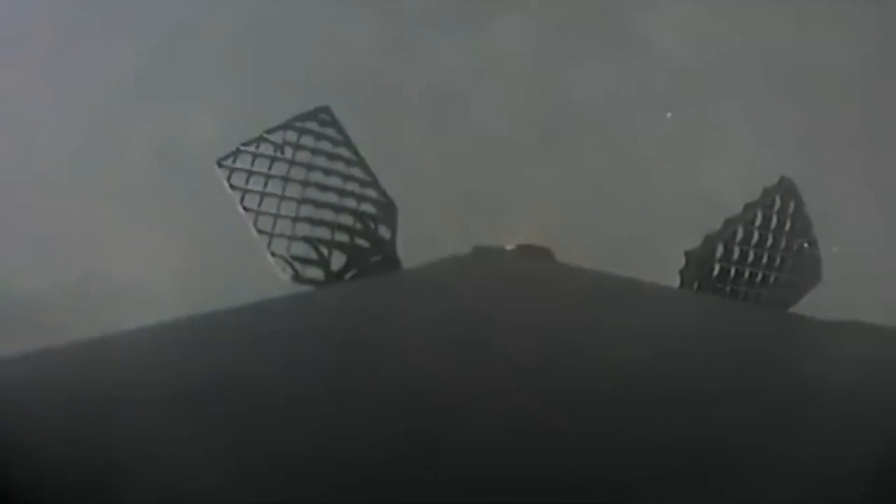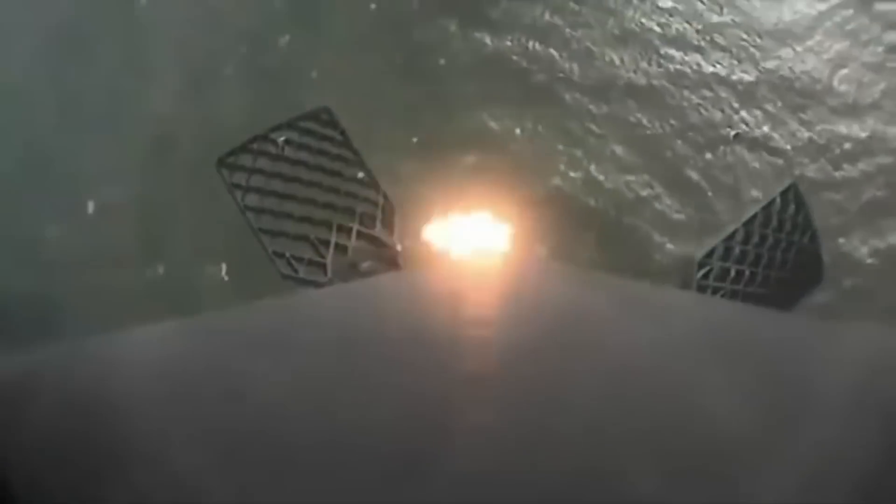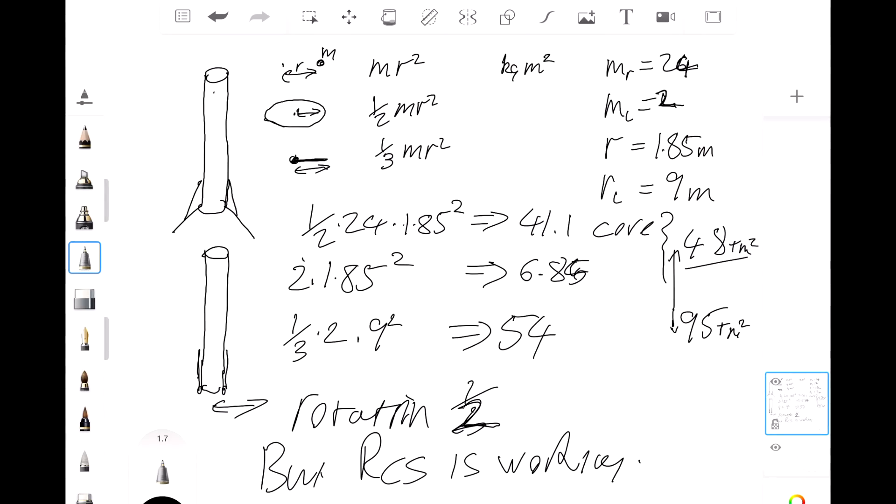So deploying the legs doesn't actually help stop the rocket. All it does is it conserves the angular momentum—it reduces the rotational speed, but then in so doing it makes it harder for the RCS thrusters to slow the thing down to zero. And indeed, if you watch the video from the rocket's point of view, the rocket continues to rotate right up to the point where the legs touch the water, and then it stops. I think that might even have damaged the leg.